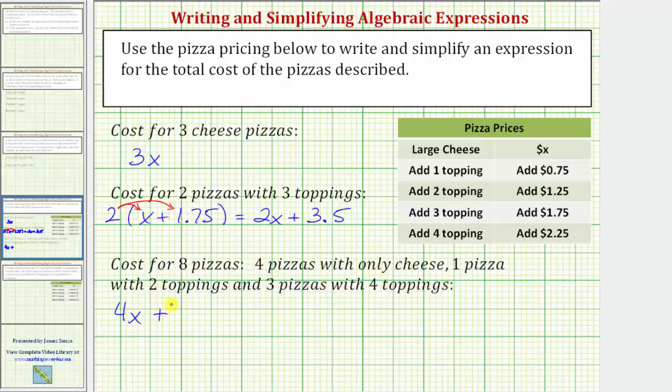plus one pizza with two toppings. A two-topping pizza is going to cost x dollars plus $1.25, giving us the expression x plus 1.25 plus, now we want the cost of three pizzas with four toppings. So, we will have three times the cost of a pizza with four toppings, which is x plus 2.25.